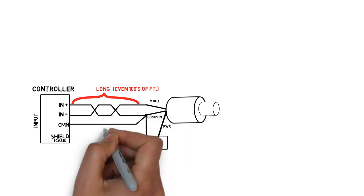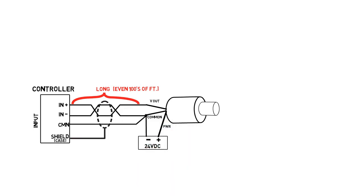Connect the cable shield to the shield connection, which should go to protective earth ground. Usually, the shield should be connected on only one end. If the shield is already connected at the sensor, don't connect it at the controller.